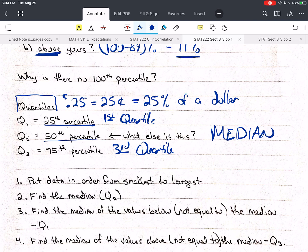So Q2 is also a name for the median. So how do we do this? Our procedure is we first put the data in order from smallest to largest. Then we find the median.